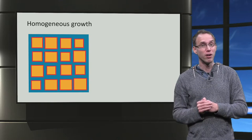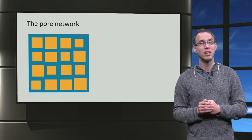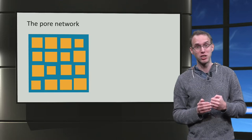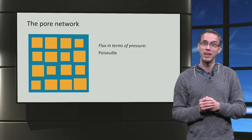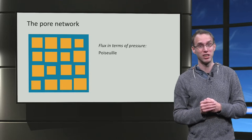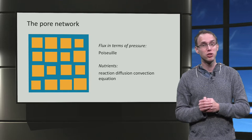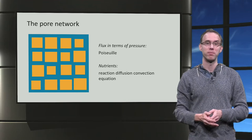A short overview of our 2D pore network model. We neglect the throats. Given tube radii, we compute fluxes and pressures. Nutrient concentration is updated via a reaction-diffusion-convection equation. Then we update the amount of biomass in each tube, and this leads to new tube radii, and we go back to step 1.